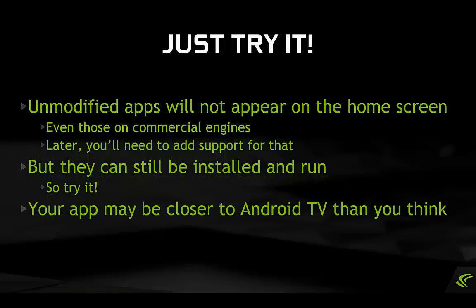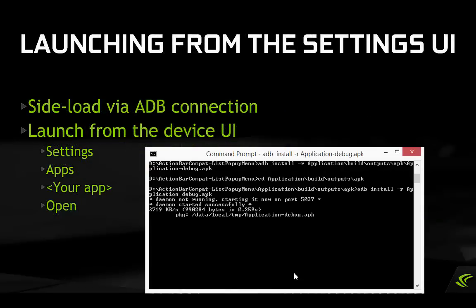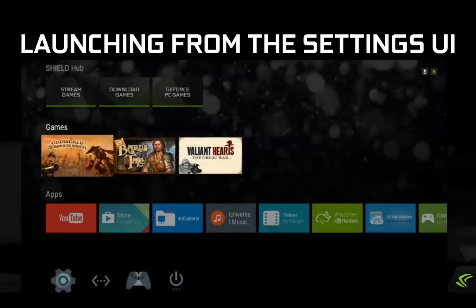The first step you'll likely want to take is to simply run your app as-is on Android TV to triage the situation. There are numerous steps you'll need to take to make your app show up in the Android TV launcher, the so-called lean-back launcher. Most unmodified apps will not install straight to the Android TV launcher, even those created in some commercial engines. However, there are two easy ways to launch an unmodified Android app on Android TV, even if it was built to target an older version of Android. You can side-load your APK over ADB, and then launch it from the Android TV settings UI, as seen here.